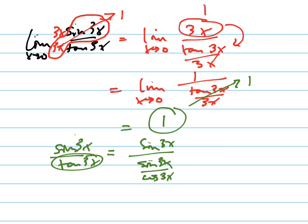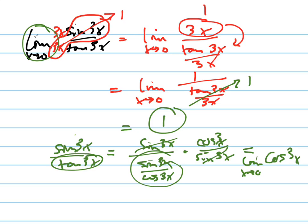Now when I flip and multiply this, cosine x over 3x over sine 3x, those cancel out, and I just get cosine of 3x. Remember, I have the limit as x goes to 0. So that equals the cosine of 0, which just equals 1.